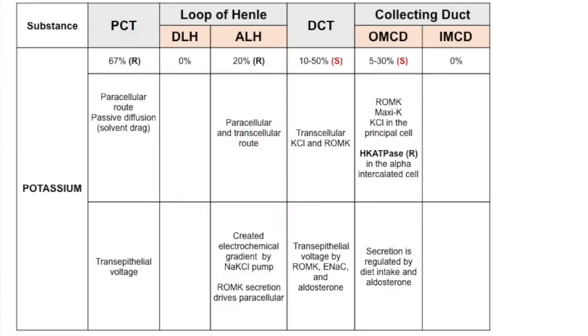Reabsorption of potassium occurs in the proximal convoluted tubule, while secretion is variable depending on intake and aldosterone. In the outer medullary collecting duct, potassium is reabsorbed only via the hydrogen-potassium ATPase pump of the alpha-intercalated cell.